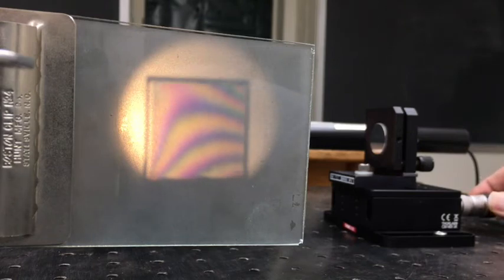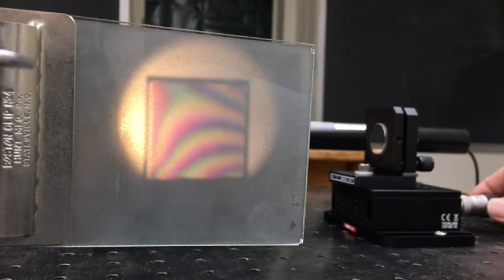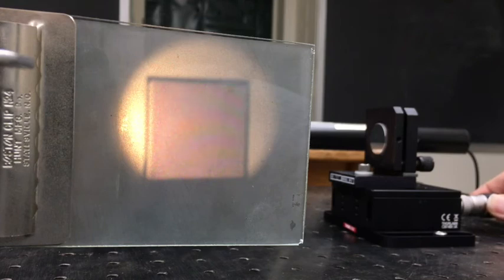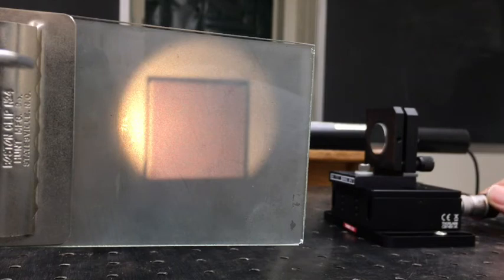We get to the position where we're at zero path length difference and keep going and then they disappear on the other side. So the total range of motion is literally just a dozen wavelengths or so before the interference pattern disappears entirely.